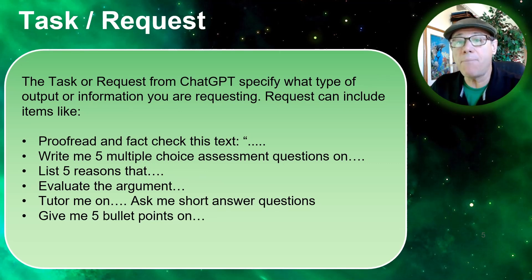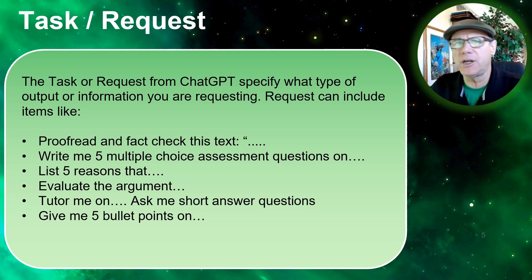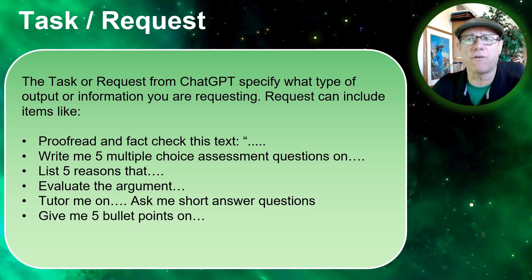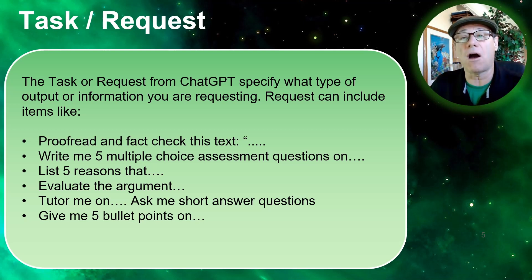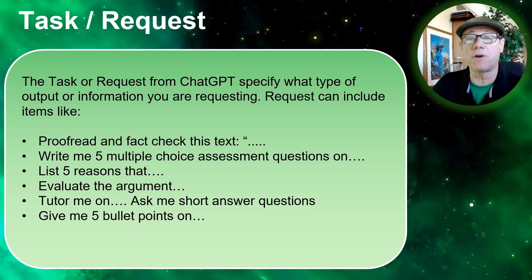Now the main part of the prompt is the task or the request — what kind of output, what kind of information do we need? Requests can include things like: proofread or fact-check a piece of text; write me five multiple choice assessment questions; list five reasons that X; evaluate the argument Y; tutor me on this subject; ask me short answer questions; or one I use a lot — give me five bullet points on this topic.